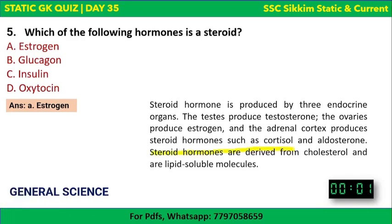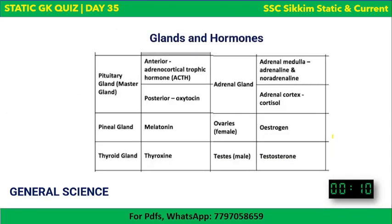Steroid hormones are derived from cholesterol and are lipid-soluble molecules. Out of the options, estrogen is the steroid. There are three endocrine organs that produce steroid hormones: the testes produce testosterone, the ovaries produce estrogen (also spelled oestrogen), and the adrenal cortex produces cortisol and aldosterone. So cortisol, aldosterone, estrogen, and testosterone are all steroid hormones.